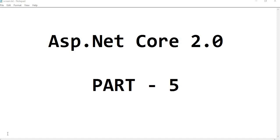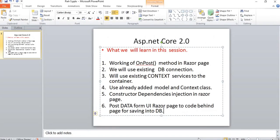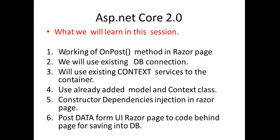In the previous video, we discussed the onGet method and displayed a list in Razor Pages. In the current video, we will cover the onPost method — we will post data, save it to the database, and then verify it appears on the list page.